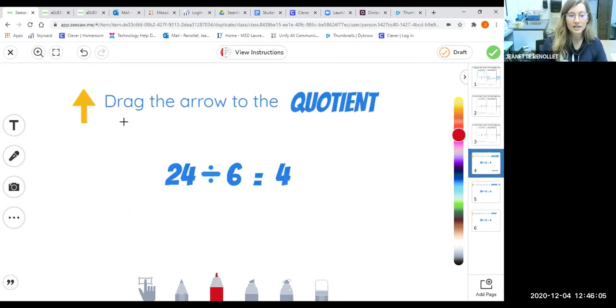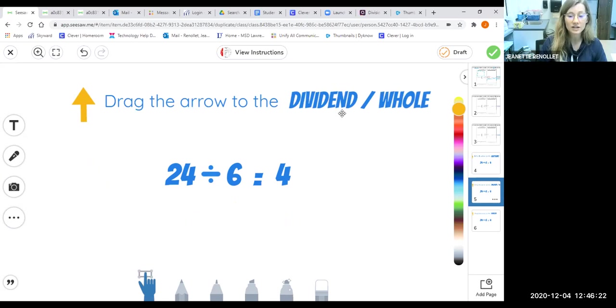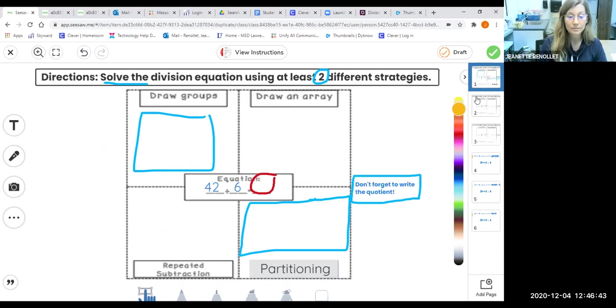On slide 4, it says drag the arrow to the quotient. You're going to click the arrow and move it to the quotient in the equation. On slide 5, it says drag the arrow to the dividend or the hole. You're going to drag the arrow to the dividend and place it there. On slide 6, you're going to drag the arrow to the divisor. You're going to show me which number is the divisor. Don't forget, you may use your notes. You have all of this written down in your notes. You may use anything in your math notebook to help you solve all six slides for your division assessment. When you are done, you will turn it in with the green check.